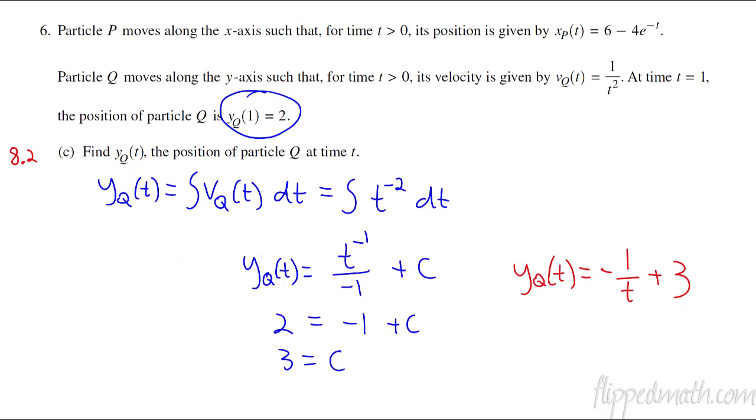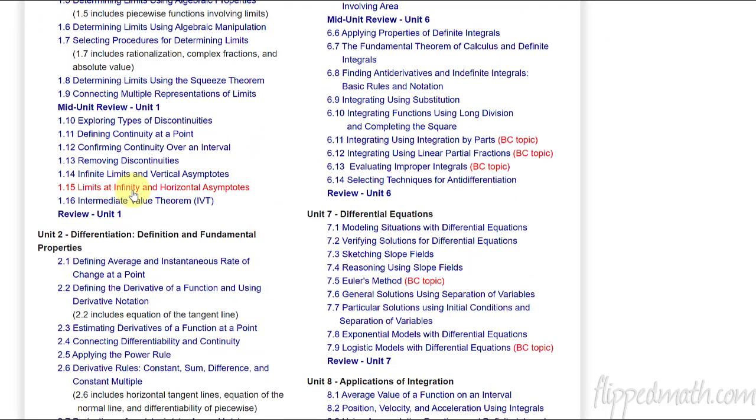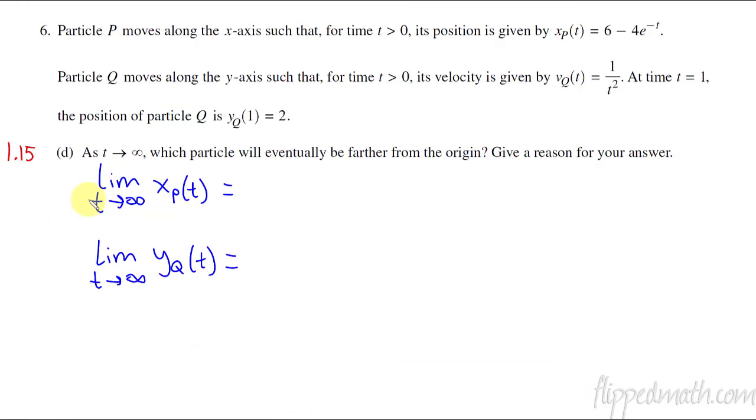And our last problem now, part D. Part D is from lesson 11.5, which deals with limits at infinity and horizontal asymptotes. We're dealing with a horizontal asymptote. We're just going to have our time approach infinity. As time approaches infinity, which particle is going to be farther from the origin? So what we are really doing is taking the limit as t approaches infinity of both position functions to see what the position is.